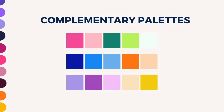Here are some more examples of complementary colour palettes. The first one has three greens, and we're bringing those to life with a couple of pinks. The next one is blues — a variety of blues brought to life with a couple of oranges. And the bottom example uses purples, brought to life with the complementary colour on the colour wheel, which is yellow.